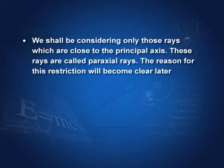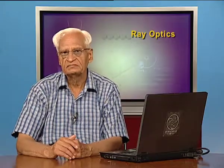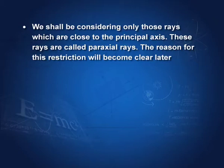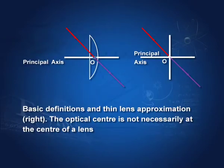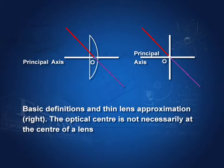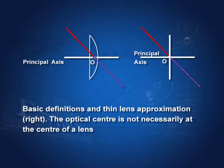We shall also take only paraxial rays. Paraxial rays are rays which are near the axis and make small angles when they strike the surface of a lens or a mirror. The optical center has already been defined. We shall be using Cartesian convention for signs. Instead of drawing a thick lens, in some diagrams we take just a line showing that the lens is very thin. The optical center is a point inside the lens through which a ray goes undeviated — it is not necessarily in the middle. The line going through the optical center is called the principal axis of the lens.